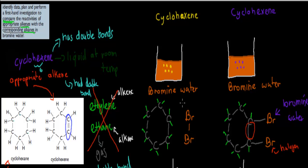So these bromines, because of that double bond, become attracted and attached to it. Whereas with cyclohexane, when we put cyclohexane into the bromine water, cyclohexane has no double bond. So these bromines won't be attracted because they're only attracted to places which have lots of electrons, and cyclohexane doesn't have any area which has particularly many electrons. So nothing's going to happen — there will literally be no connection at all, they'll just stick to themselves.